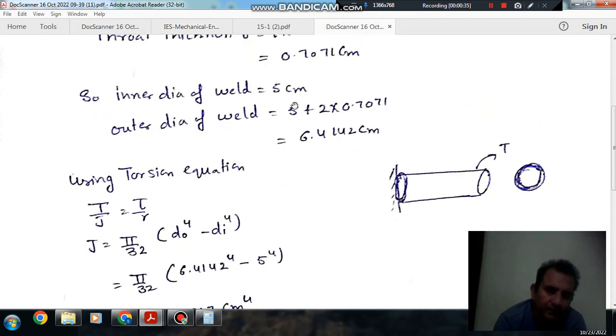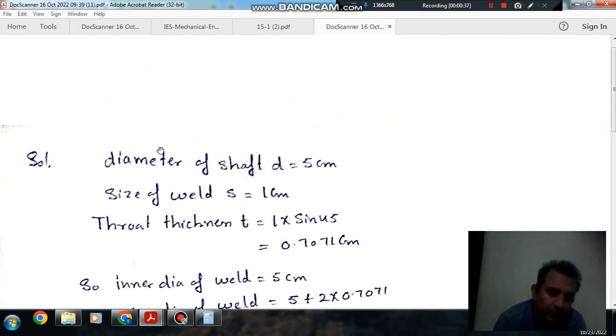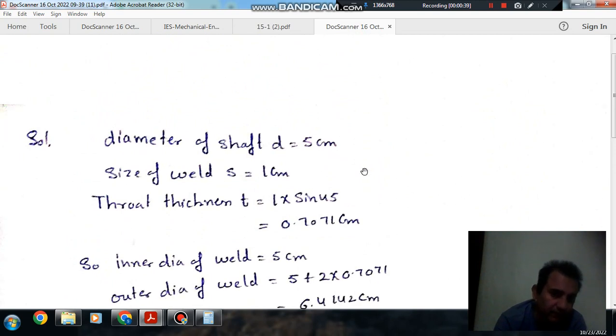So it is given that the inner diameter of shaft is 5 cm and size of weld is 1 cm.